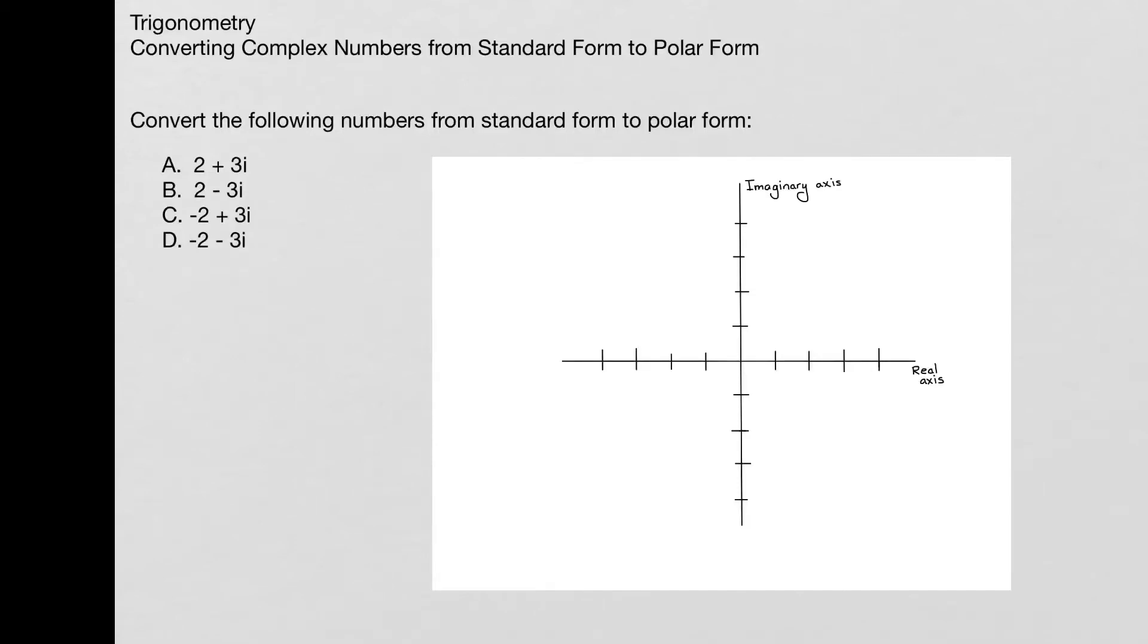In these problems, I'm converting complex numbers from standard form to polar form. Notice that they're all fairly similar - it's all a 2 and a 3, and it's the signs that are different, and that's what's going to make a little bit of a difference for these values. So we're going to convert from standard to polar form.